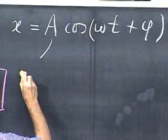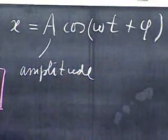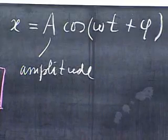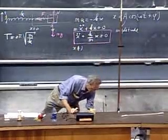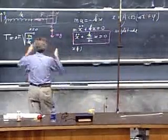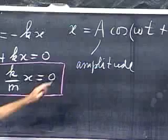This A, we call the amplitude. Notice the cosine function is, the highest value is plus one and the lowest value is minus one. So the amplitude indicates that is the farthest displacement from zero. On this side would be plus A, and on this side would be minus A. So that's in meters.